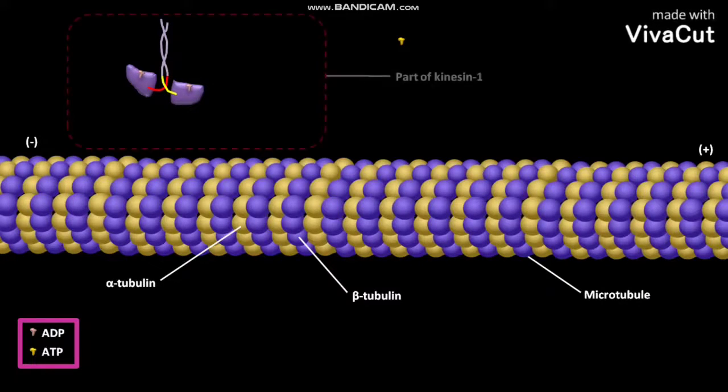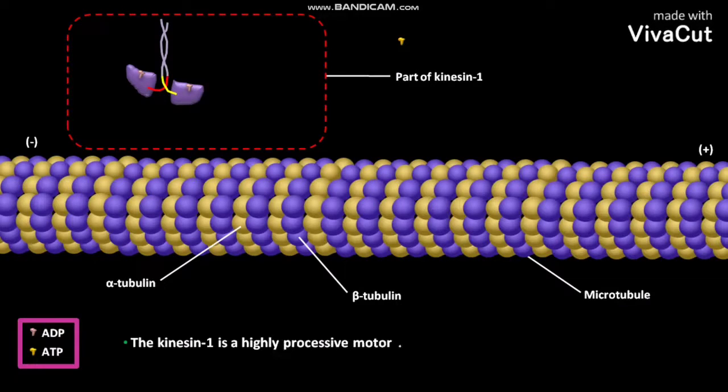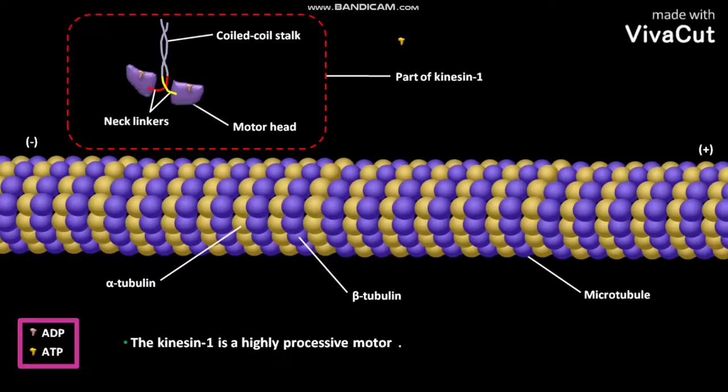This is the part of kinesin-1 protein. The kinesin-1 is a highly processive motor. Each motor head of kinesin-1 is attached to the coiled coil stalk by a neck linker. The neck linkers are flexible in nature.